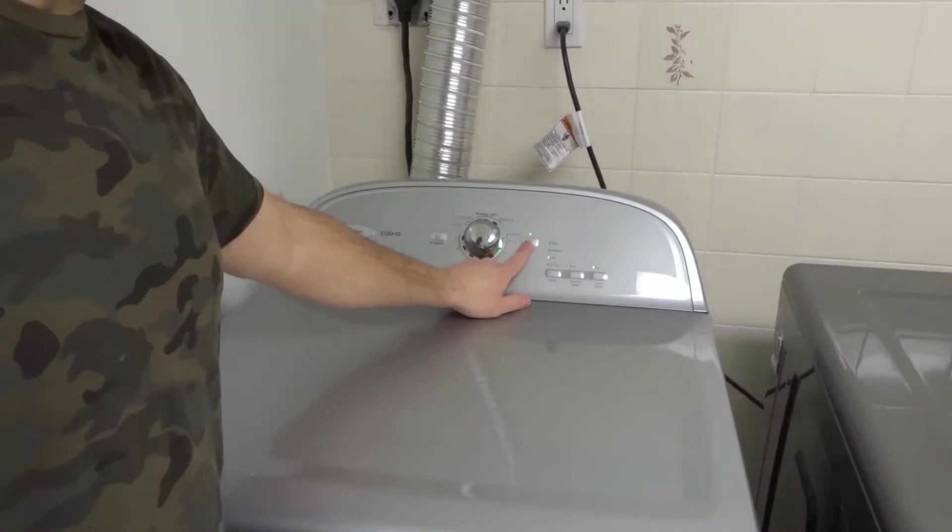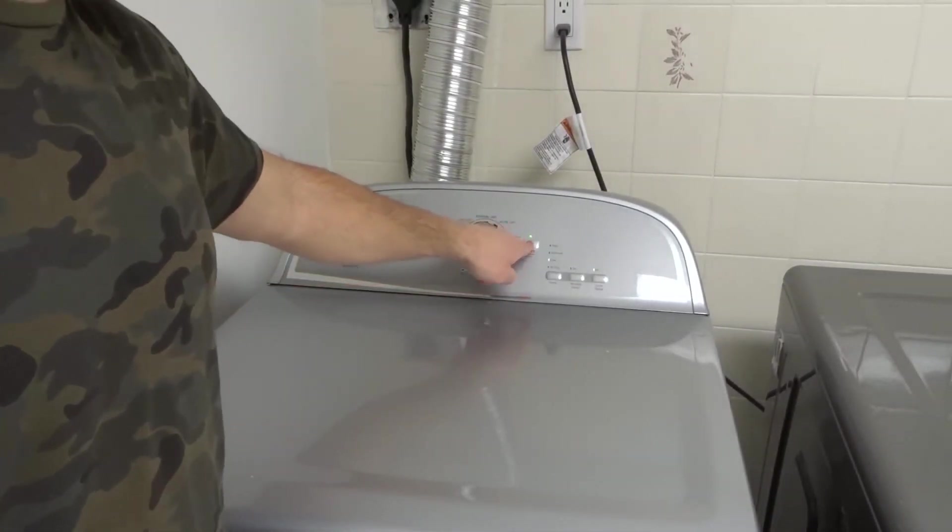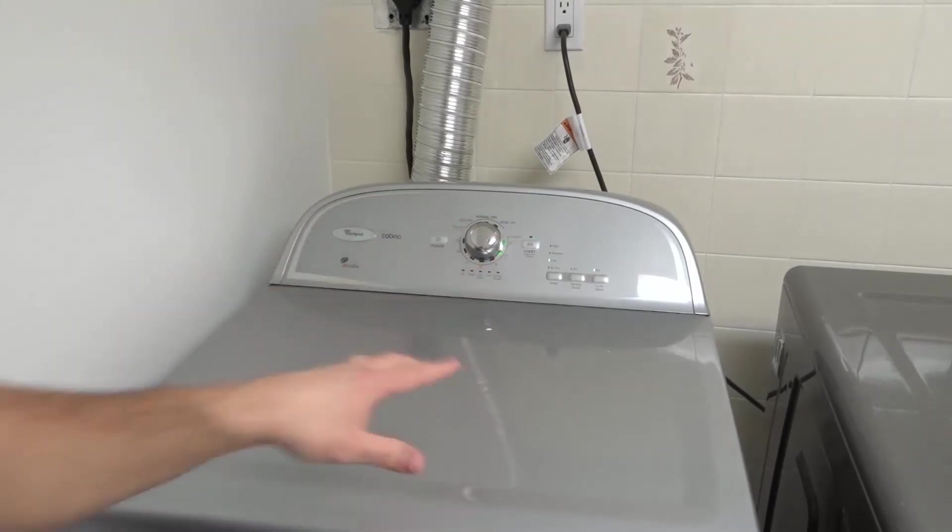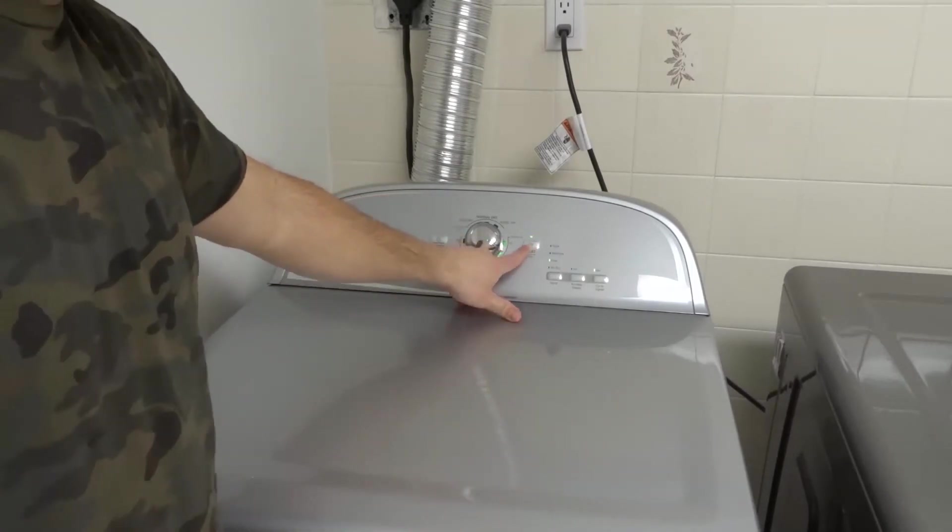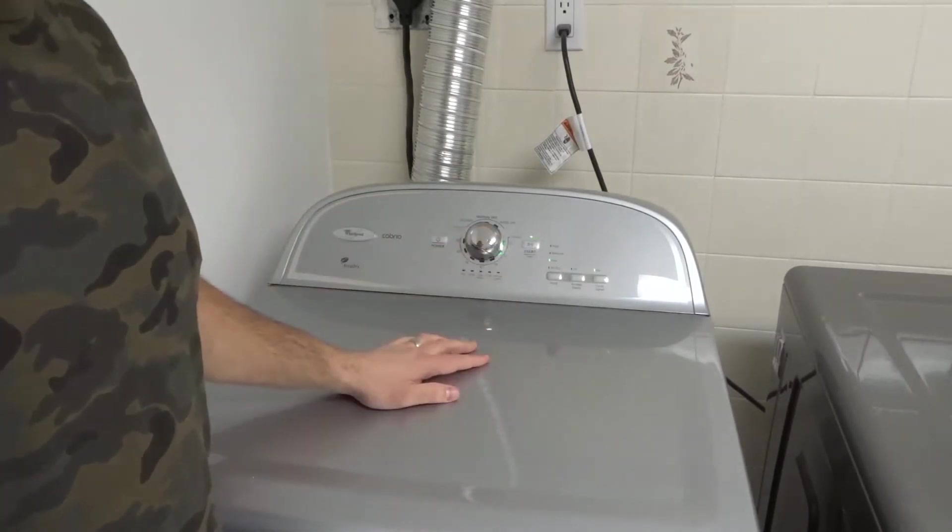So now it's drying the clothes, well, the imaginary clothes that are in there. If you want to pause the cycle, you can pause it by pushing that start button again. So right now it's paused, and you can see that the light is flashing, which tells me that it's paused. If I wanted to start it up again, I could push that again. Very simple. Just like that.